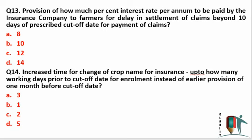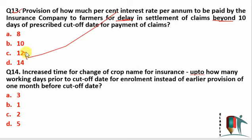A very important question: provision of how much percent interest rate per annum is to be paid by the insurance company for delay in settlement of a claim beyond 10 days? If an insurance company does not settle the claim within 10 days, they have to pay interest on the remaining amount. The interest rate for that is 12 percent. This is a very important fact-based question you should remember.